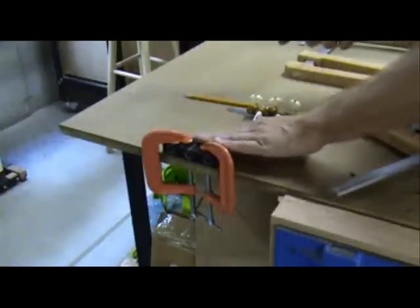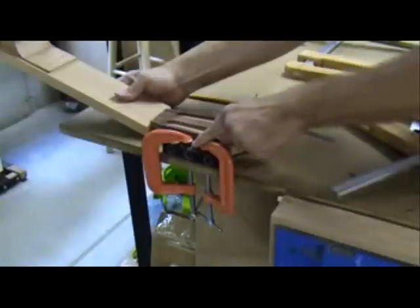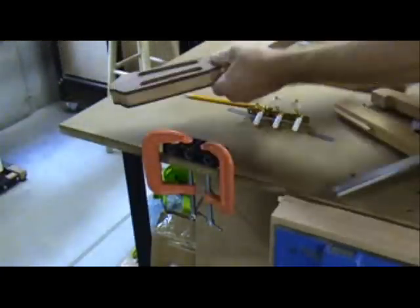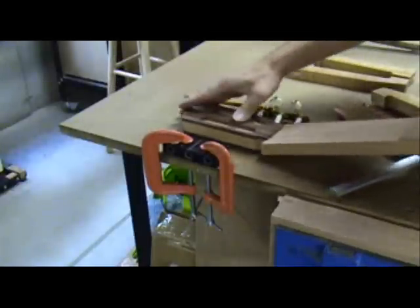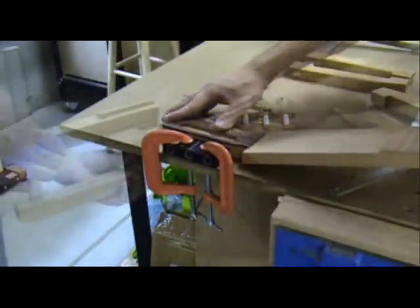To drill the tuner holes on the other side of the peg head, leave the jig clamped to the table. Take the neck and spin it around, then reclamp it to the table in front of the jig. Make sure that your center line is lined up and then drill the holes.